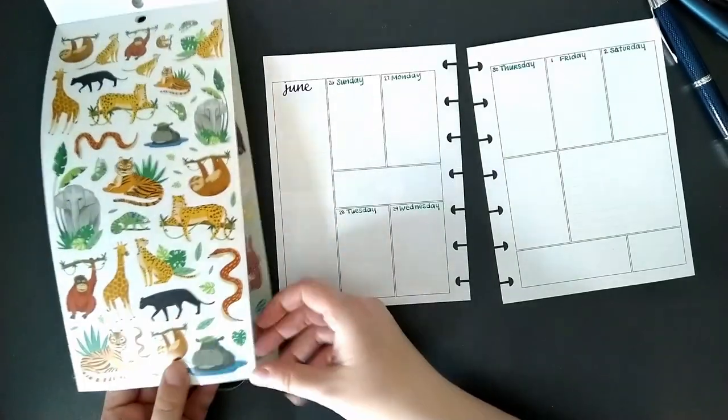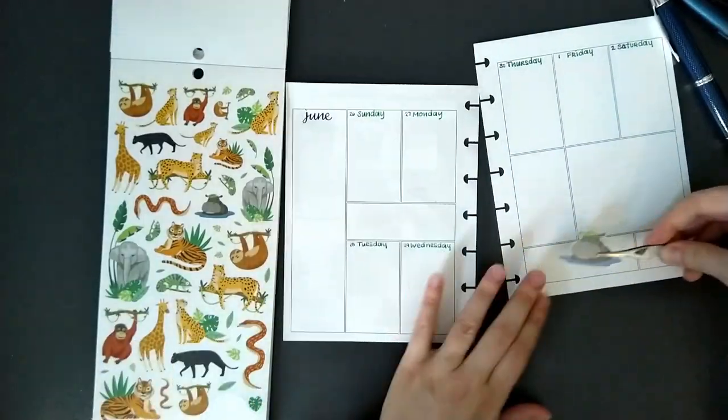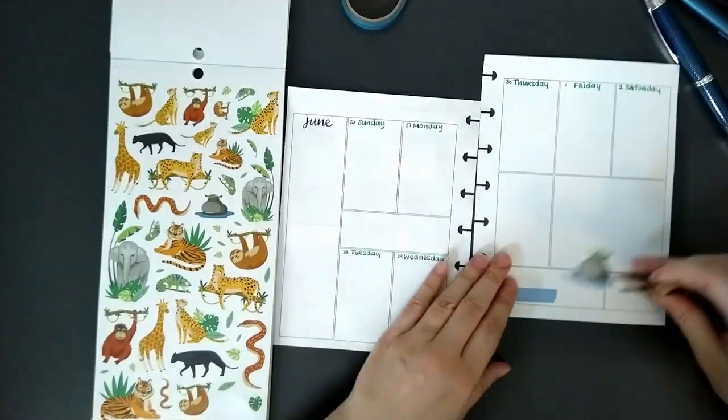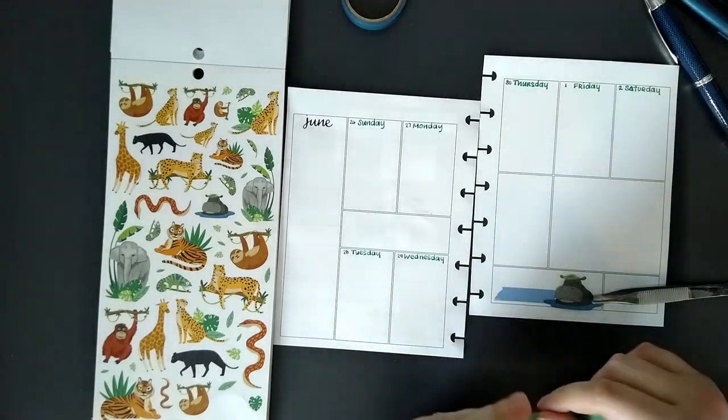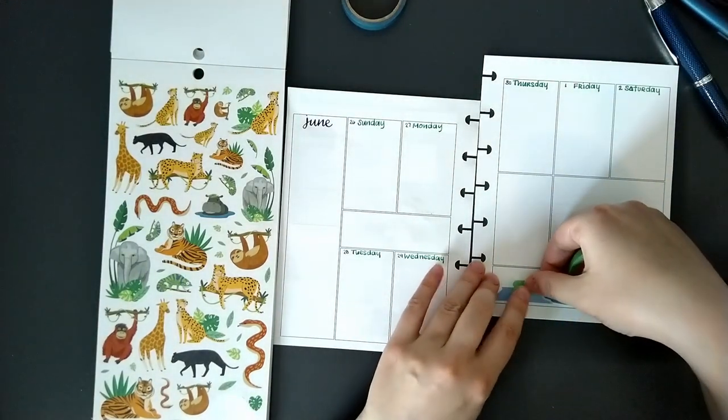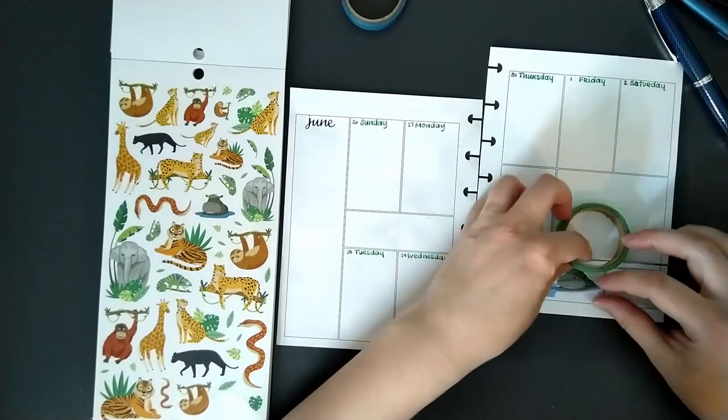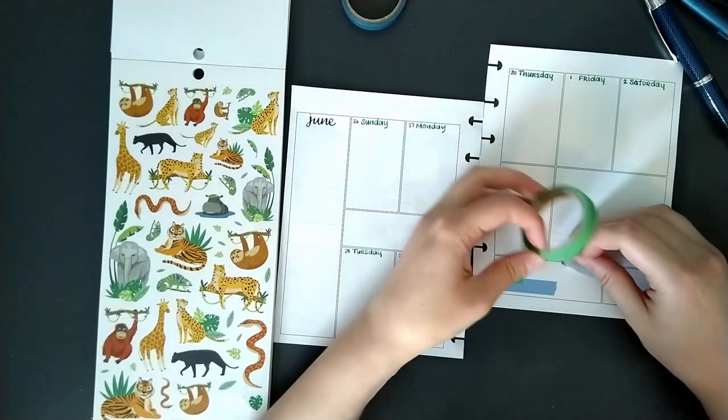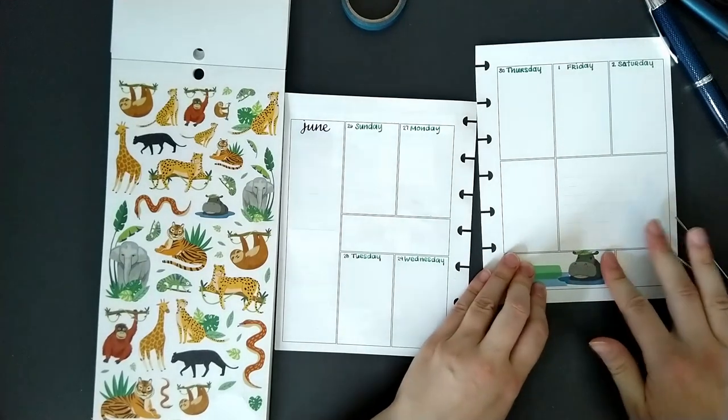And then I'm just going to plonk some stickers down. So hippo chilling here in the water, maybe with a little washi. Trying to use the washi. That's an ongoing part of my project to stash stash down, which I will put a link to. Oh, no. Okay. Well, that's staying there. There we go.